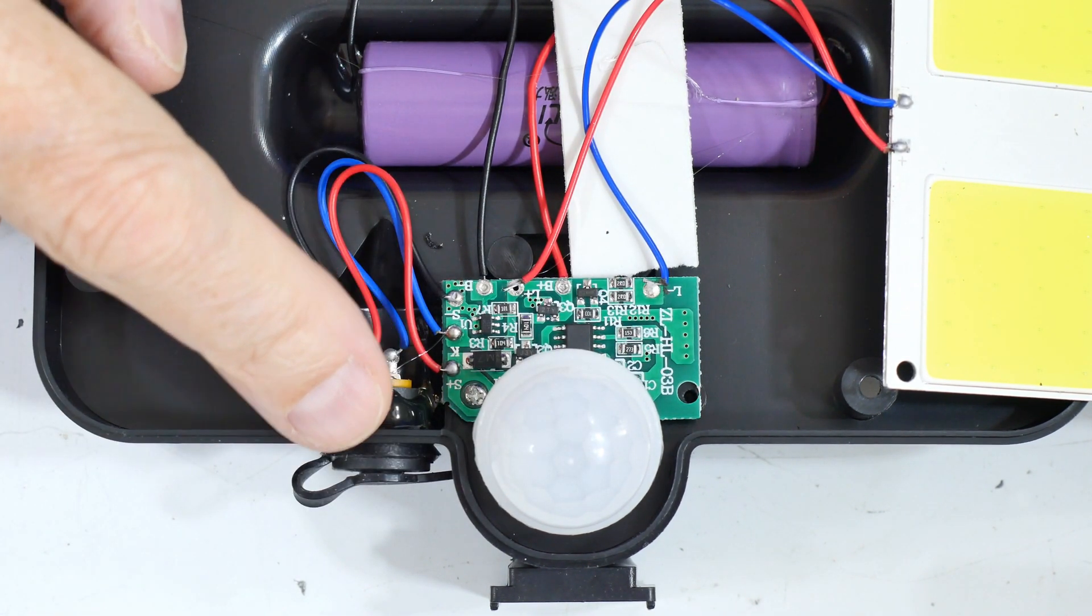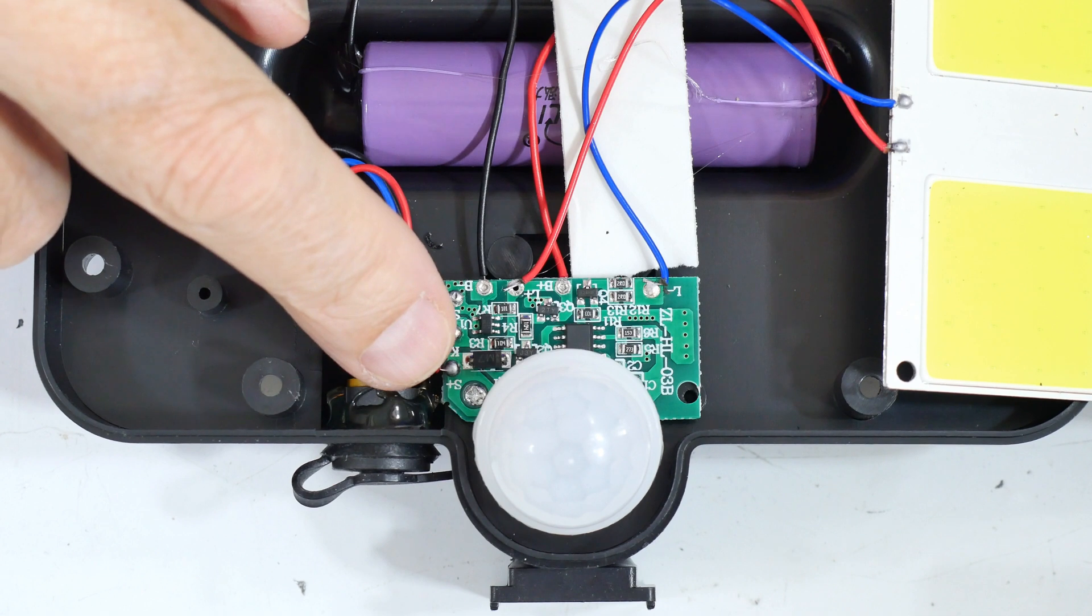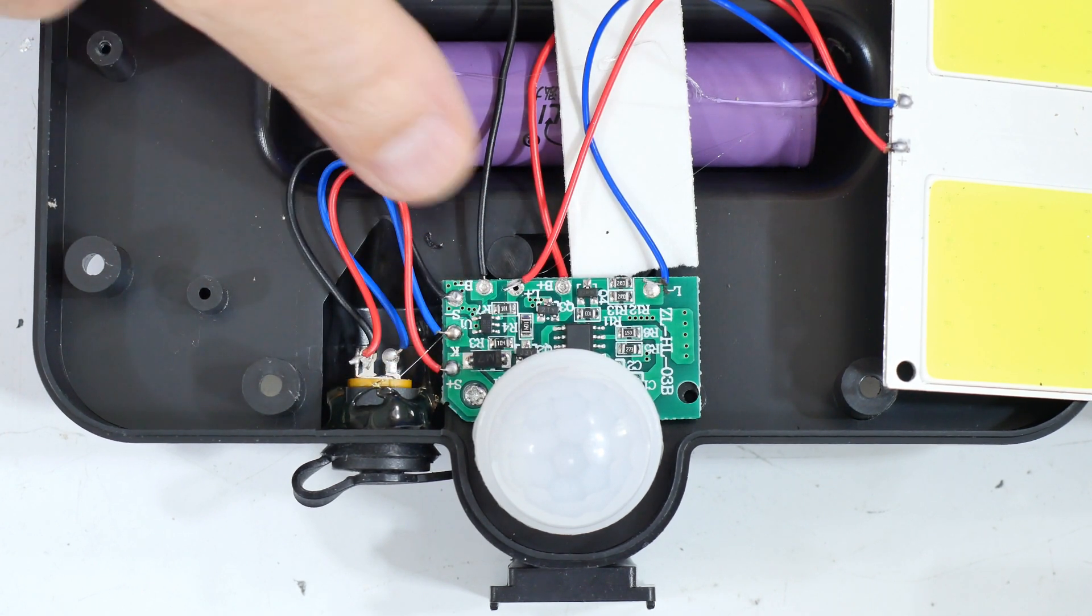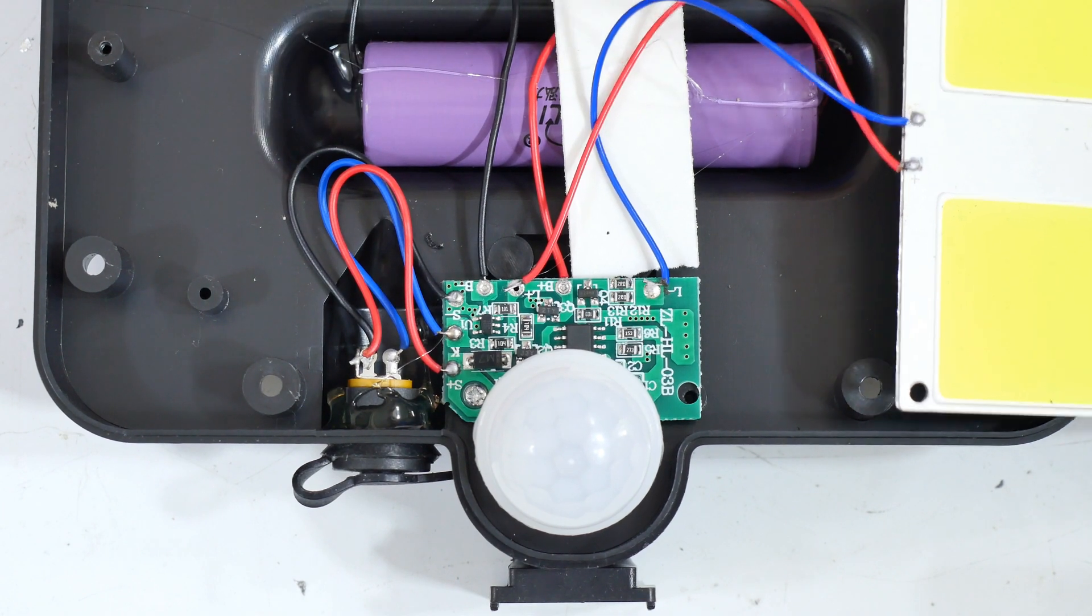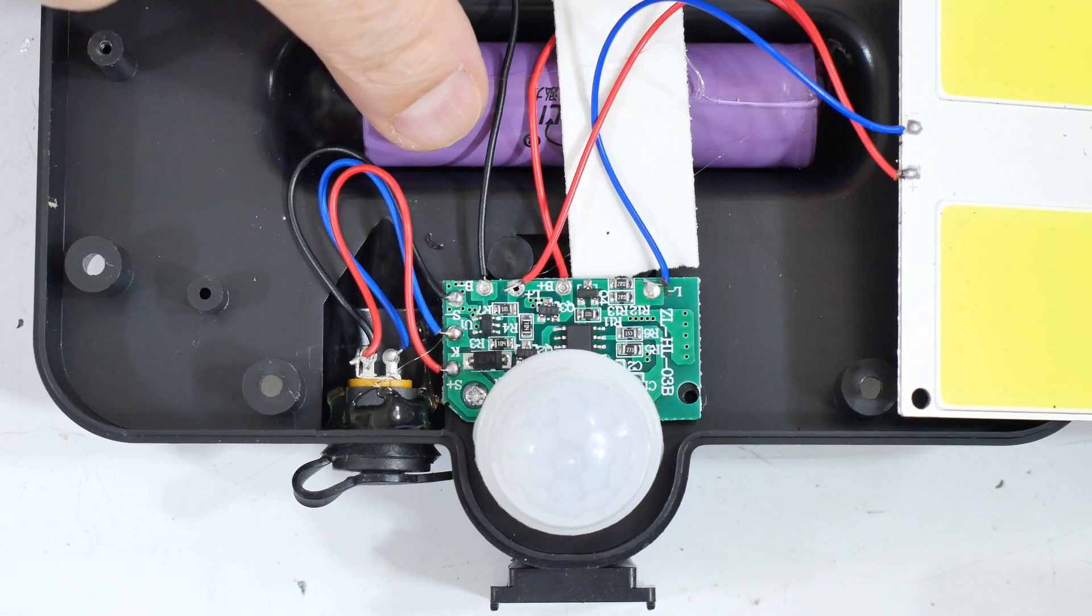This is the plug where the solar panel comes in, so the power comes in here on this side of the circuit board. And then these are the battery connections that go out here to control the charge on the battery.